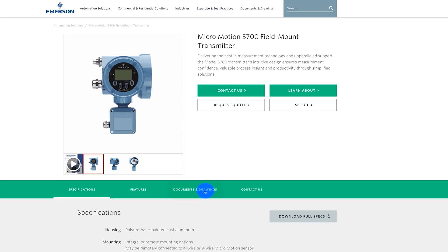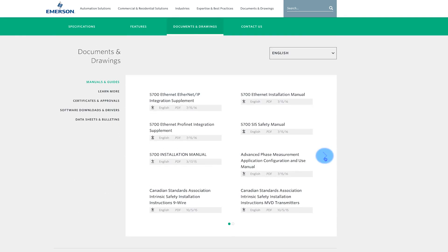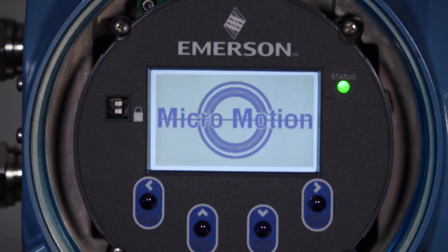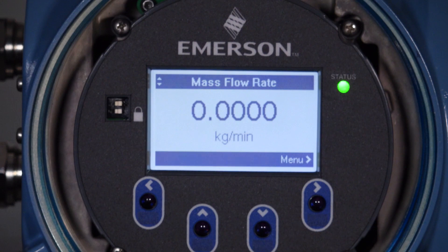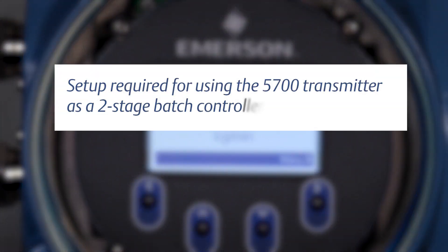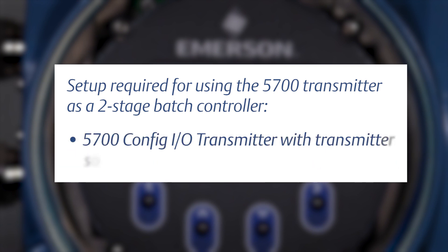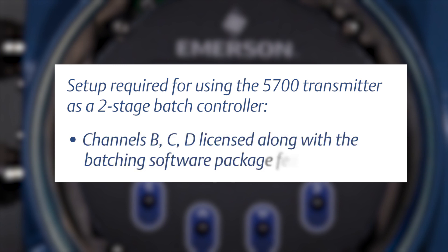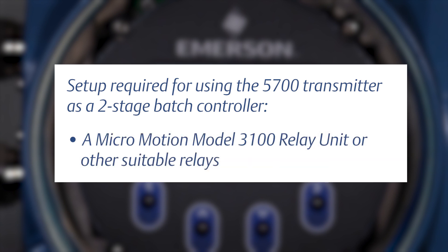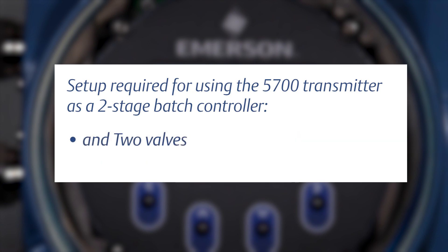For the complete set of configuration instructions, please refer to the appropriate MicroMotion transmitter configuration and use manual, located on the Emerson website. The complete setup required for using the 5700 transmitter as a two-stage batch controller includes: a 5700 configurable I-O transmitter with transmitter software 2.0, a MicroMotion Coriolis sensor connected to the transmitter, Channels B, C, and D licensed along with a batching software package feature, a MicroMotion Model 3100 relay unit or other suitable relays, and two valves.